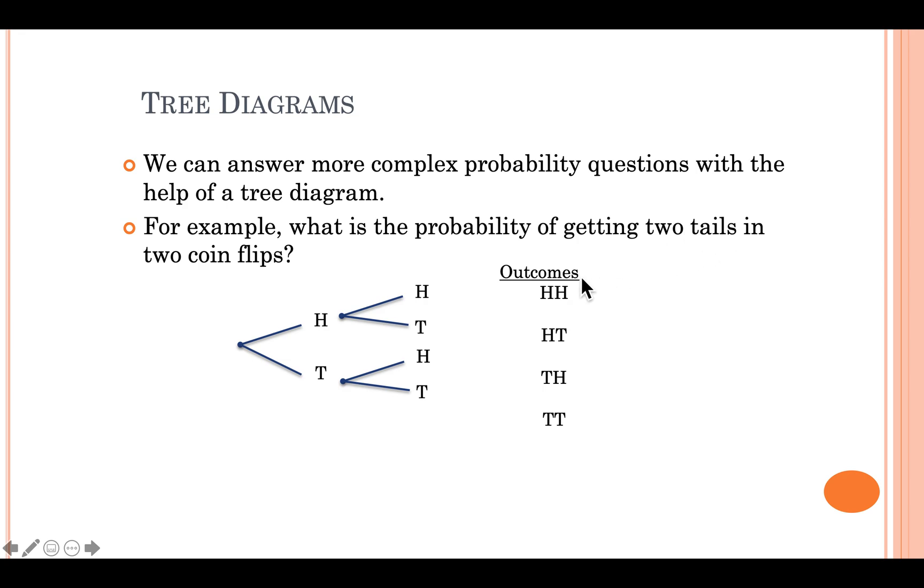So if we look at all four of our outcomes, and we look at the one way in which we can get two tails, there's only one way that it can happen. None of the other outcomes have two tails. So there is one out of four ways to get two tails. So as a fraction, it's one over four. As a decimal, it's 0.25. And as a percent, 25%.